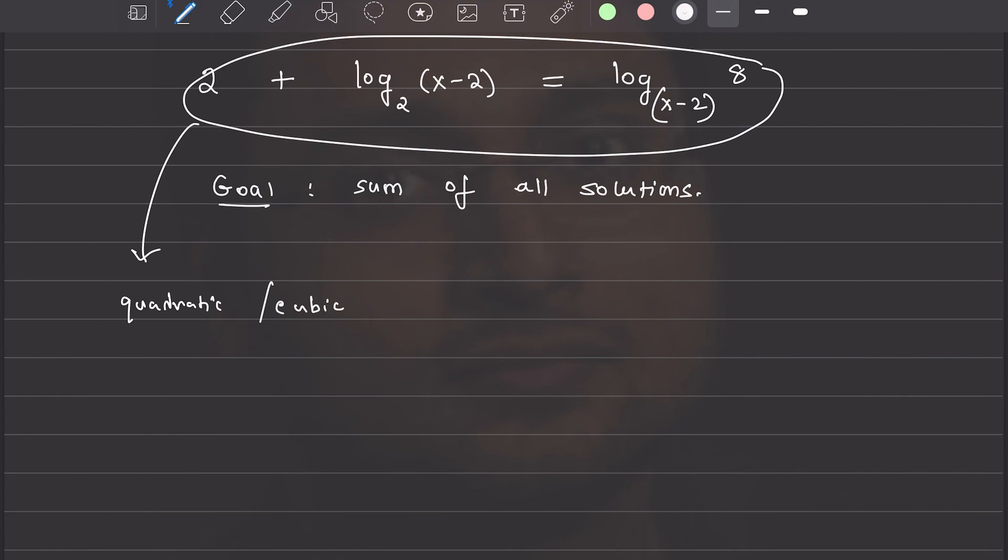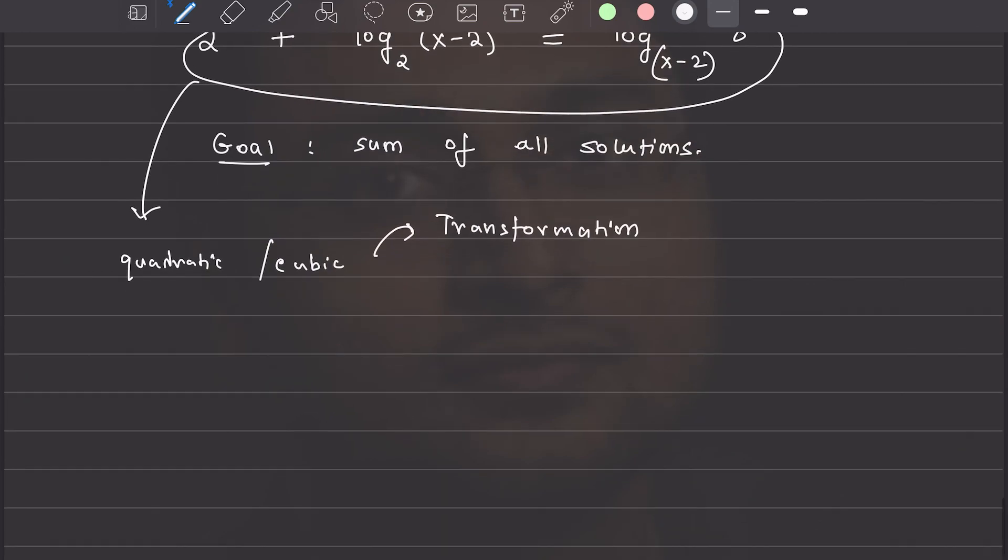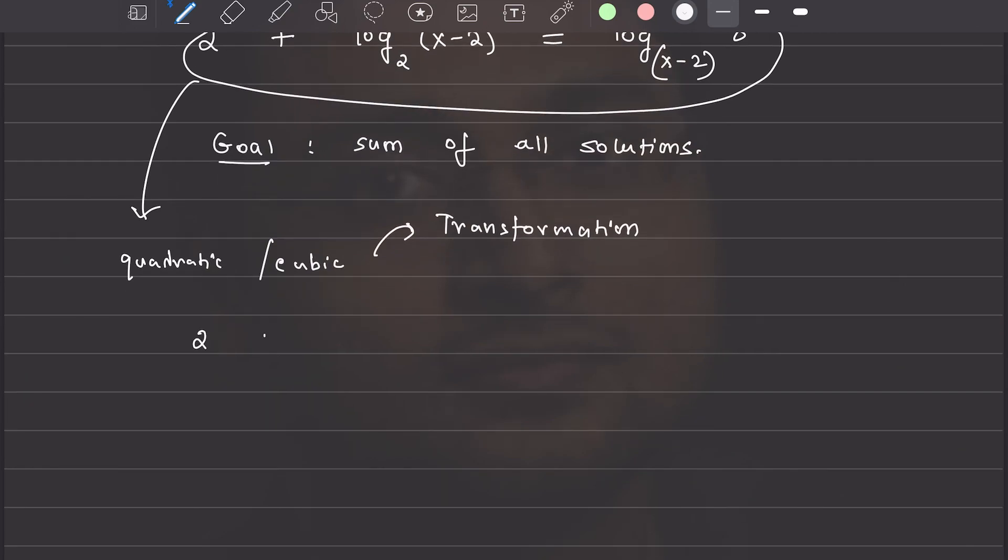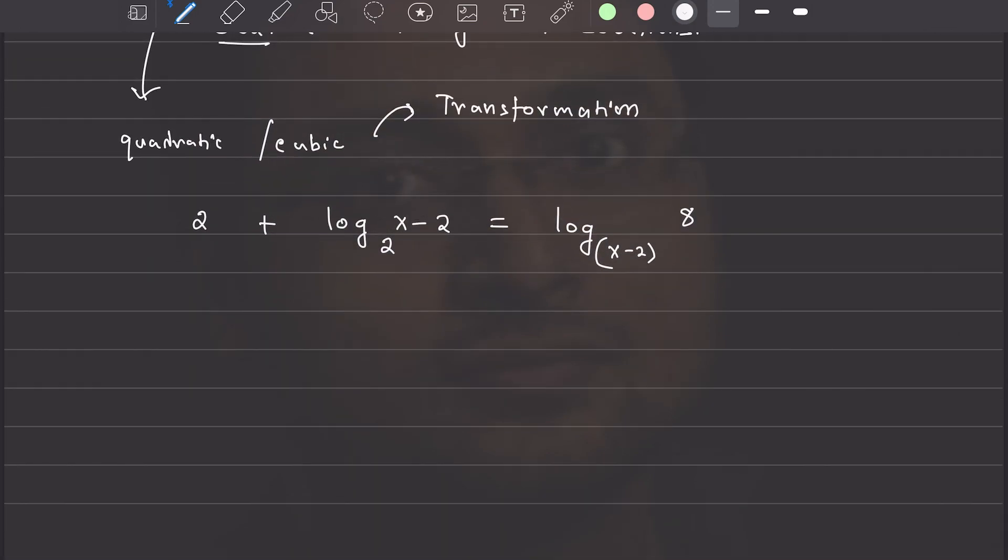We will actually use a method called transformation. We will transform this equation into a polynomial. Let's see how we can do that. So, 2 plus log base 2 of x minus 2, equals to log base x minus 2 of 8.